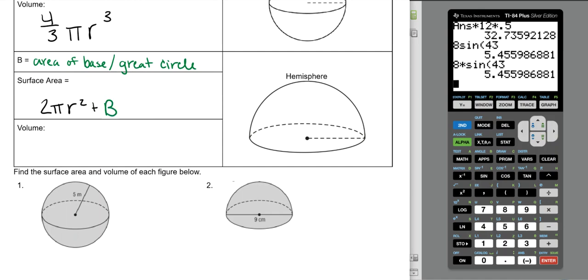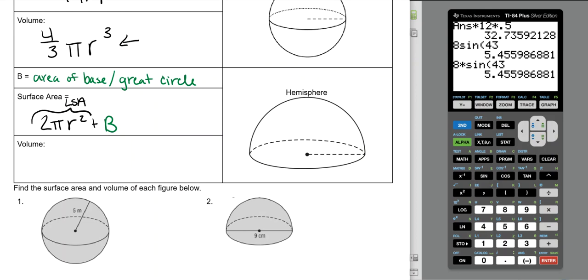However, this does have a lateral surface area. This right here is the lateral surface area, just that first part without the big B. I don't think you will ever be asked the lateral surface area of a hemisphere, but just in case, that's what it is. The volume, if I take this and split it in half, that's 2/3πr³.